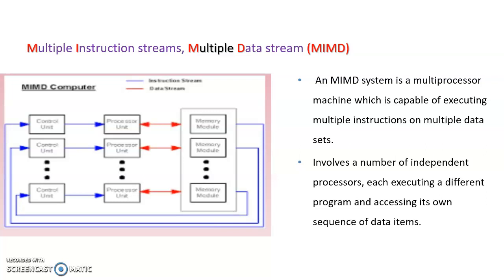The last one is MIMD — Multiple Instruction Streams, Multiple Data Streams. In this type of system there are multiple processors and these processors can execute different programs on different data. An MIMD system is a multiprocessor machine capable of executing multiple instructions on multiple data. It involves a number of independent processors each executing its own program and accessing its own sequence of data. All true multiprocessor systems are examples of MIMD architecture.